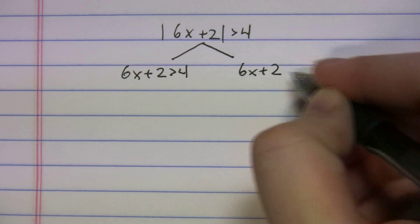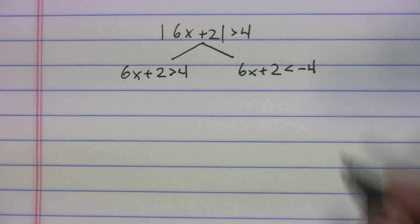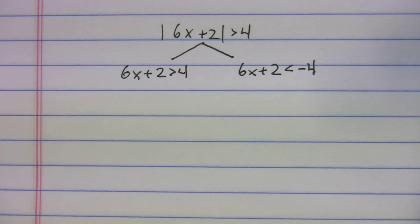You have to flip the sign because you're doing the negative number. Okay. So you're going to flip the sign. And now you're just going to solve.